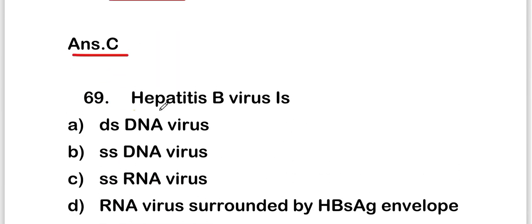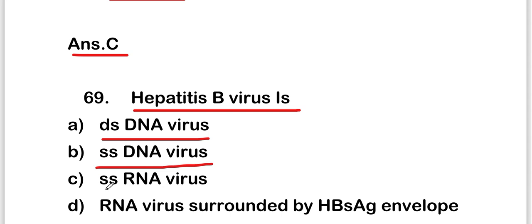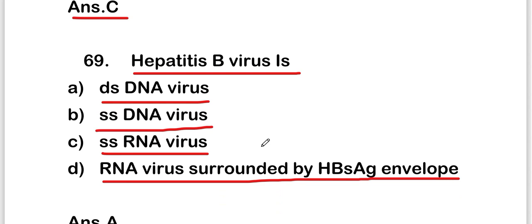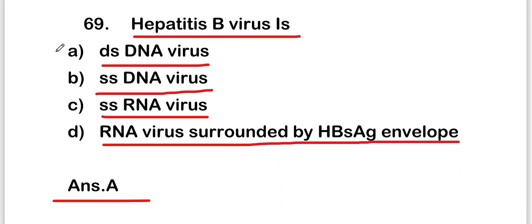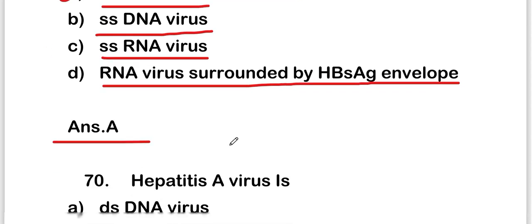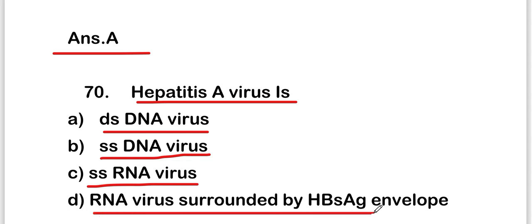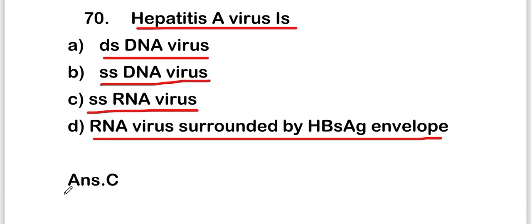The next question is: hepatitis B virus is double-stranded DNA virus, single-stranded DNA virus, single-stranded RNA virus, or RNA virus surrounded by HBsAg envelope. The right answer is option A — it is a double-stranded DNA virus. For hepatitis A virus with the same options, the right answer is option C — it is a single-stranded RNA virus.